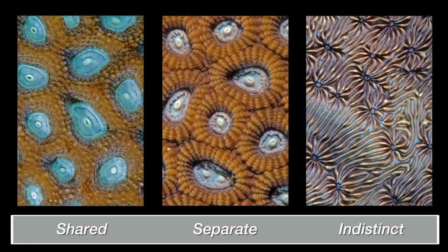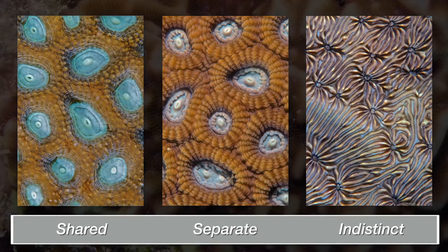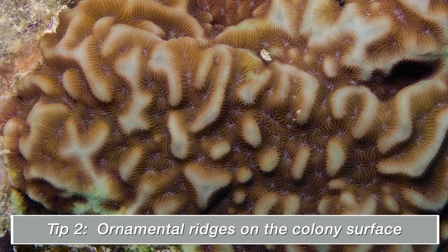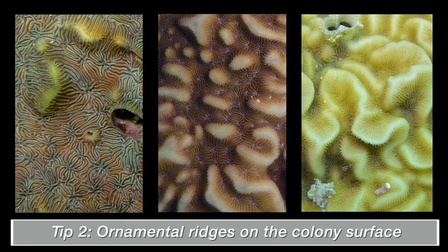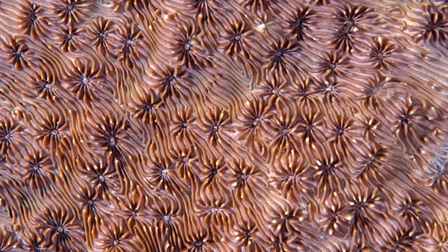Generally speaking, corals have either shared, separate or indistinct walls. But there are some corals where recognising the wall structure can be confusing. The problem is when corals produce skeletal ornament that looks like coralite walls, but isn't. In the example below, we can see three different colonies of the genus Pavona, showing skeletal ridges on the colony surface. The degree to which these ridges are developed can vary a lot. Look closely and you will see that between the ridges, there are coralites with indistinct walls that are typical of Pavona. Just as a reminder, here is what Pavona looks like without the ridges. So it is important to recognise when ridges are skeletal ornament on the colony surface and not coralite walls.